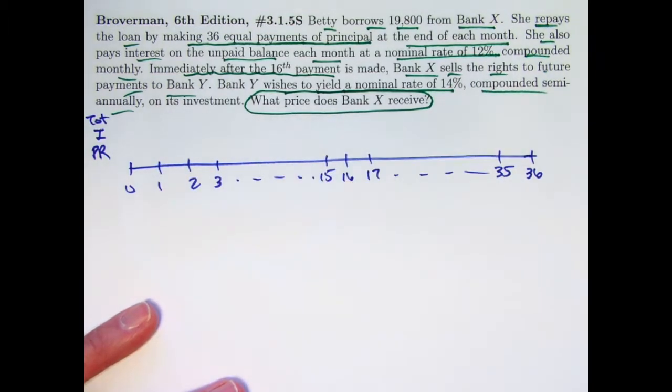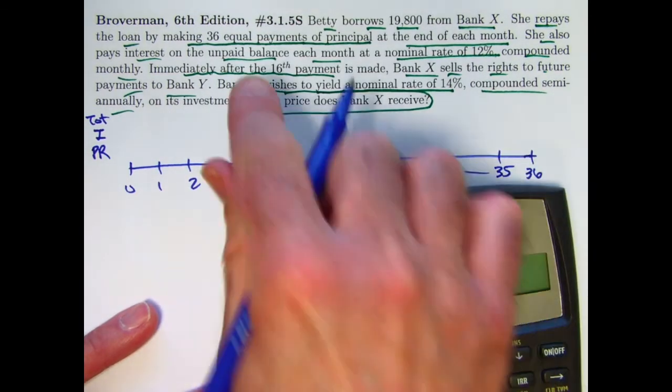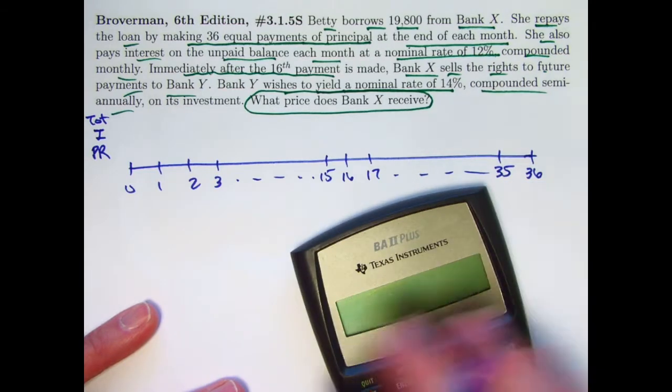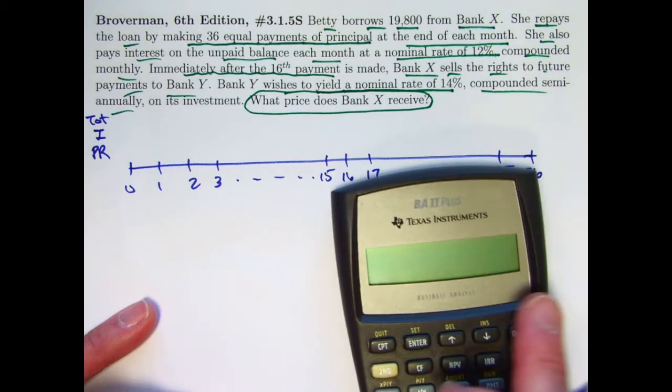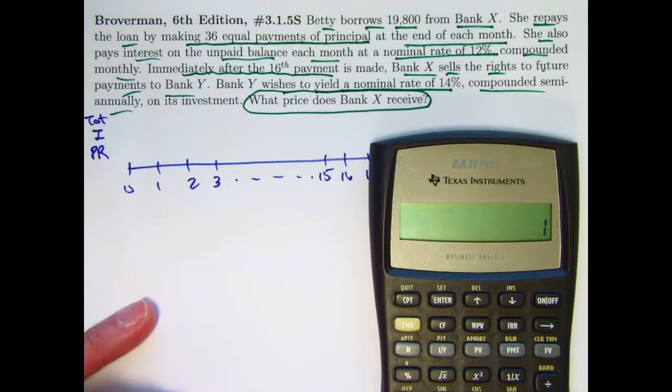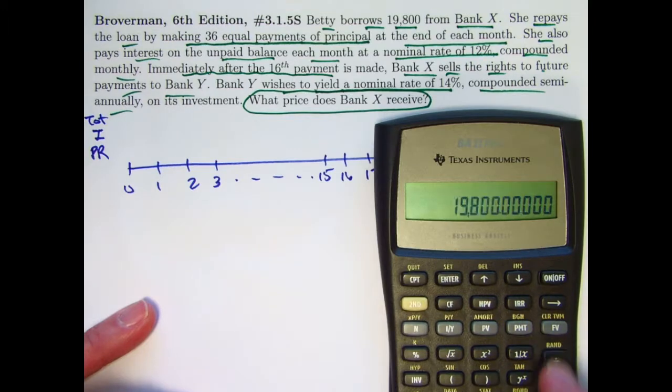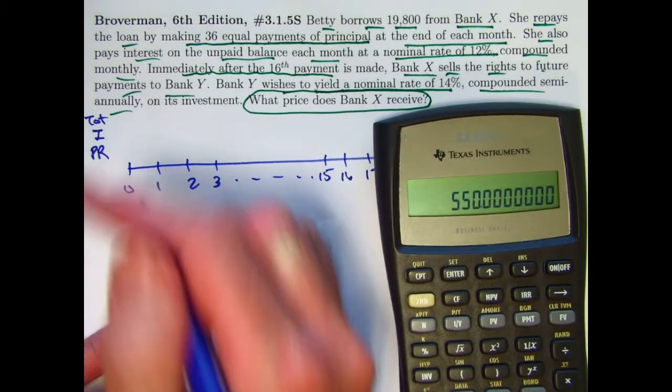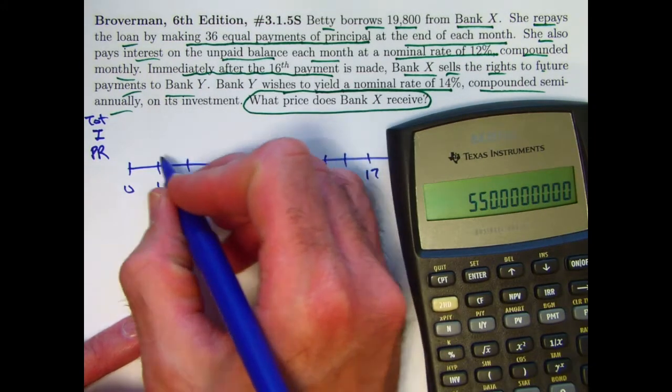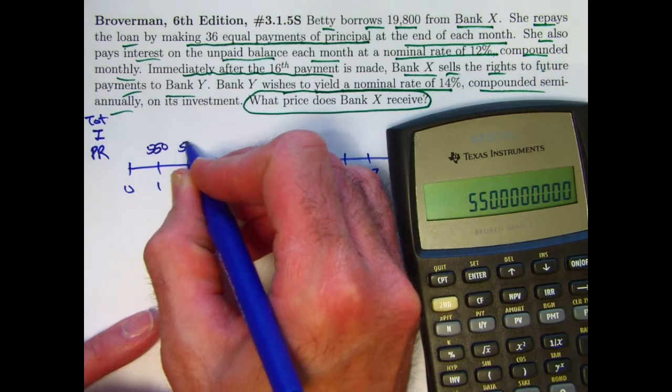Every month, the principal reduction is the same because these are equal payments to principal, and it's easy to figure out what that number should be. Just take the total loan amount, $19,800, and divide by 36. $550 is what the principal reduction is every single month. That stays the same.